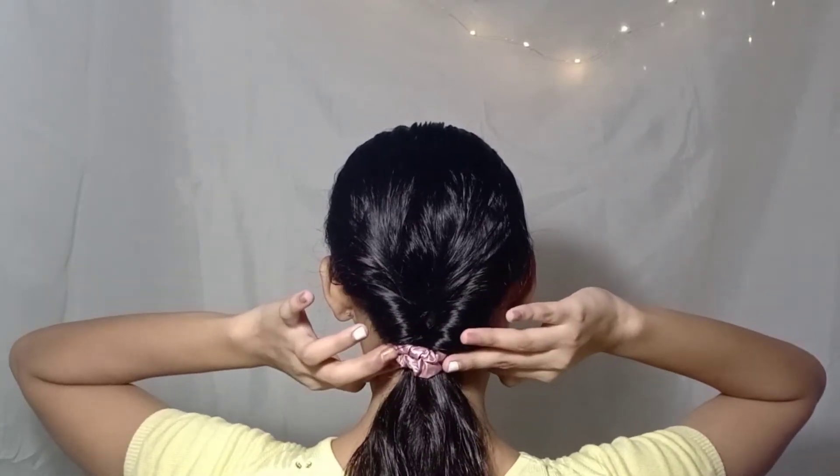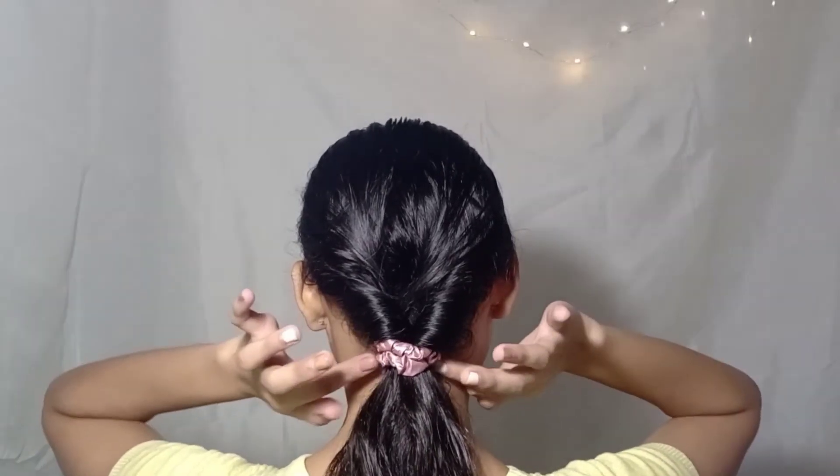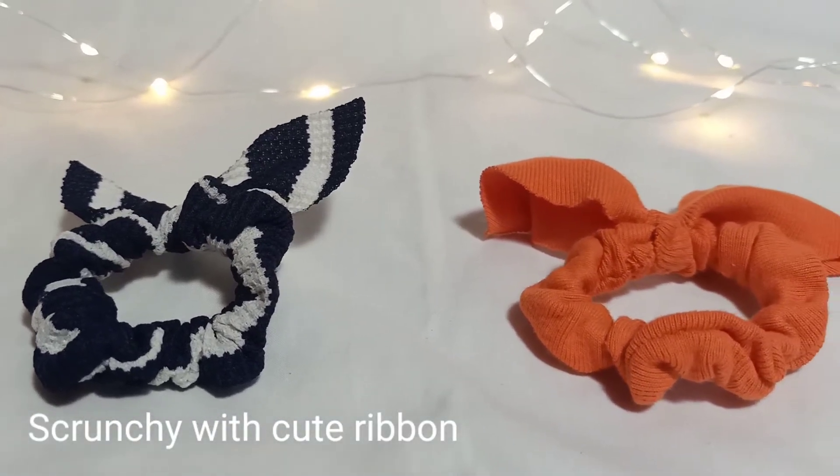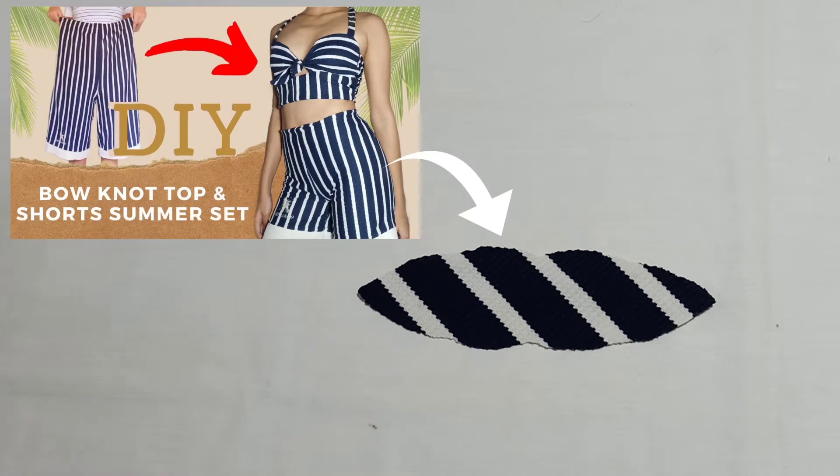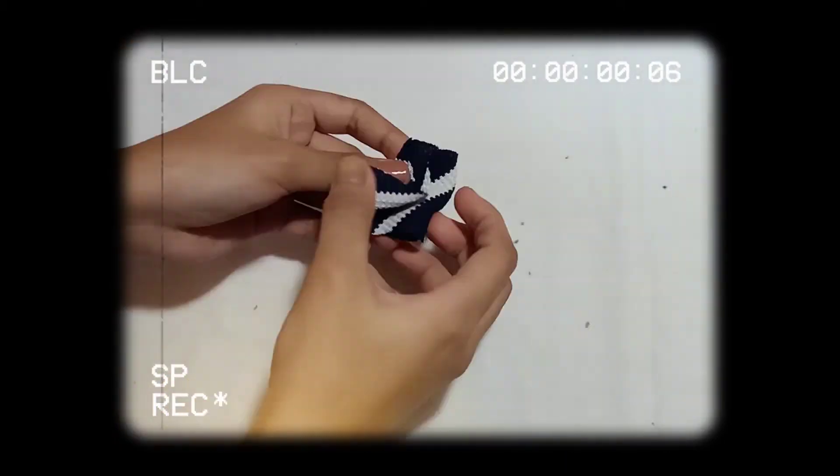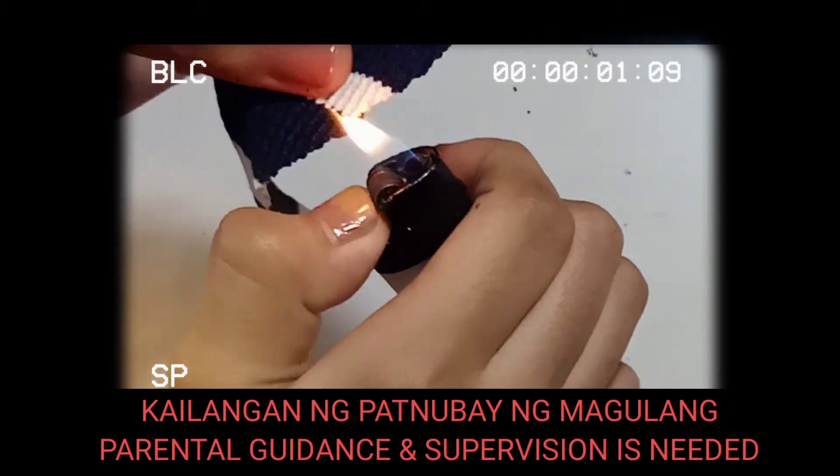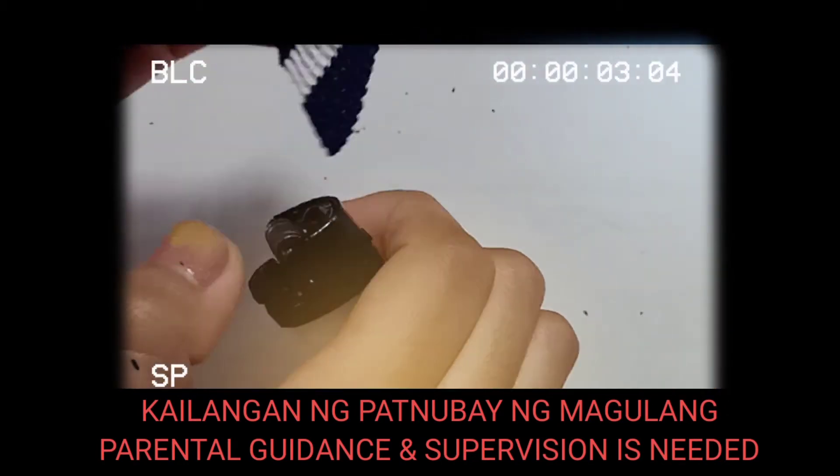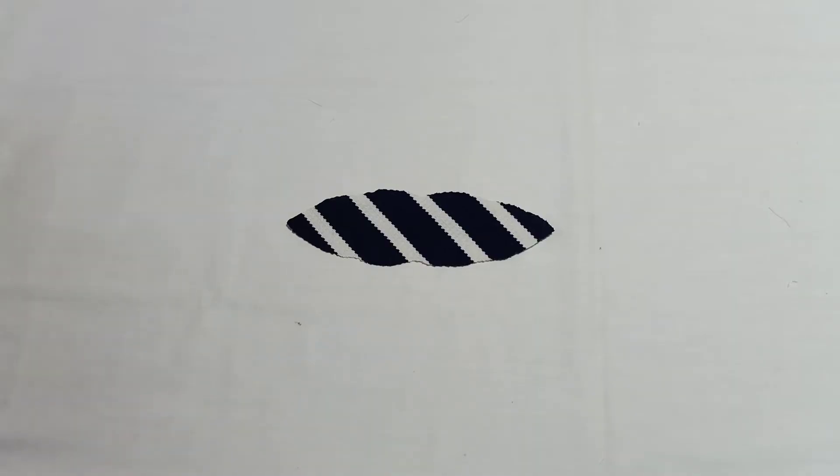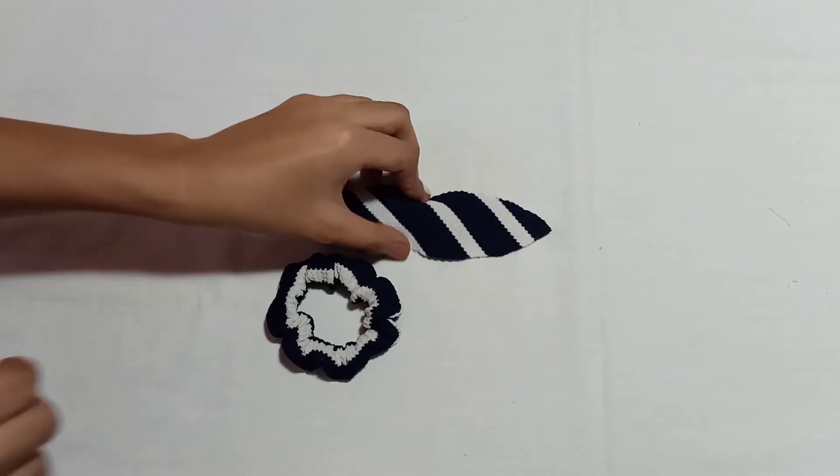Our fourth DIY is going to be a scrunchie with cute ribbon. This fabric scrap is from the summer set I uploaded. What we're making will serve as the bow or ribbon for our scrunchie. I shaped it like a moustache, but you can choose whatever shape you want. I'm burning the edges so it won't fray.